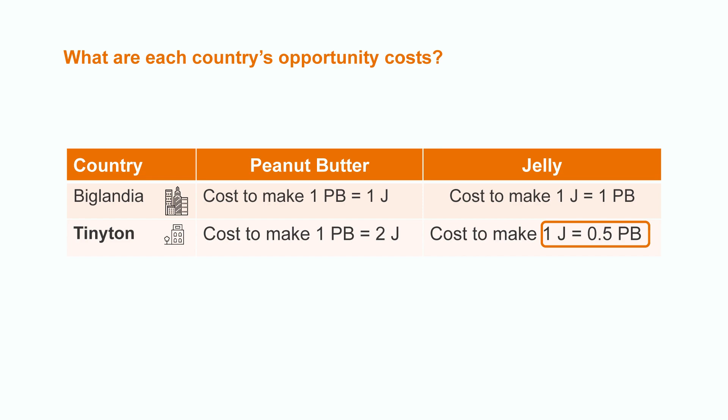Tinyton can focus more of their time making jelly because they are relatively better at doing so. Tinyton's opportunity cost of making one ton of jelly is half a ton of peanut butter. But Biglandia's opportunity cost of making one ton of jelly is one ton of peanut butter.